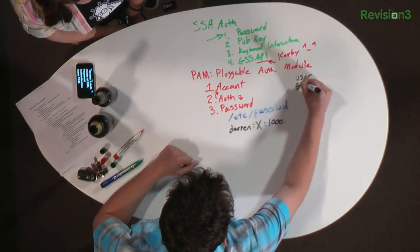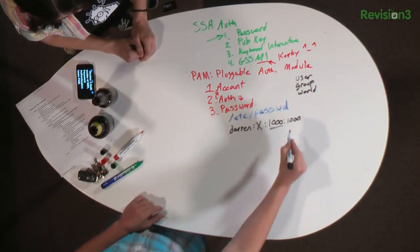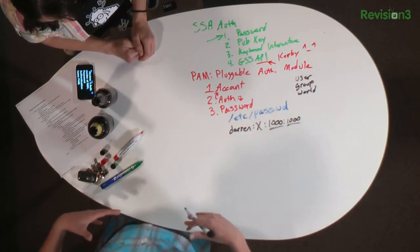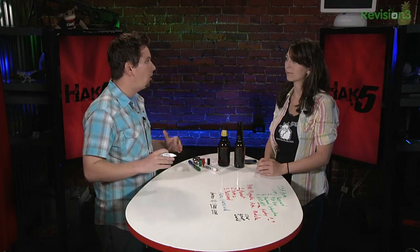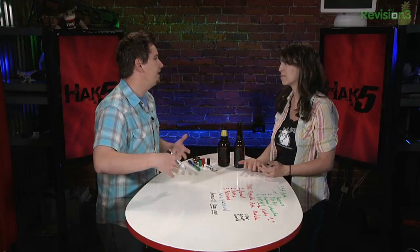That number is the user ID. In Unix there's the user, there's the group, and then the world. I also have a group ID number — also 1000 — because I am the master of my own group, though I can belong to other groups. This is my primary group. Paul and I could all be members of the Hack5 group, for instance. Group IDs are anywhere between 0 and 32,000-something.